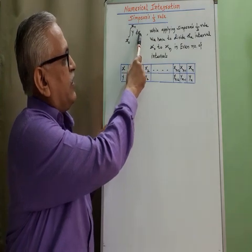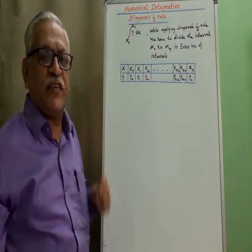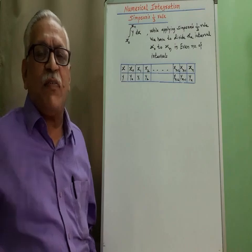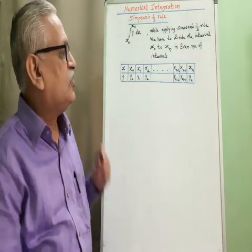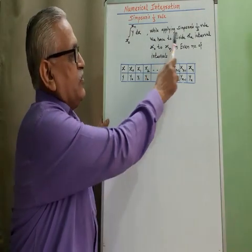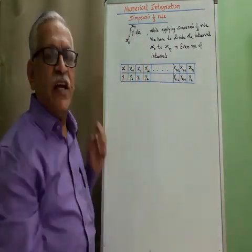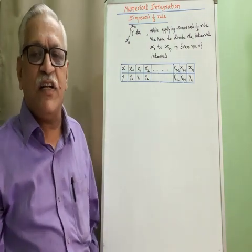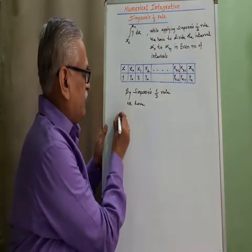To integrate y with respect to x between limits x0 to xn while applying Simpson's one-third rule, we have to divide that interval x0 to xn into an even number of intervals.